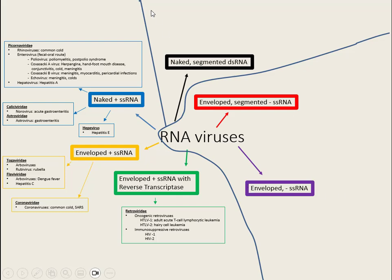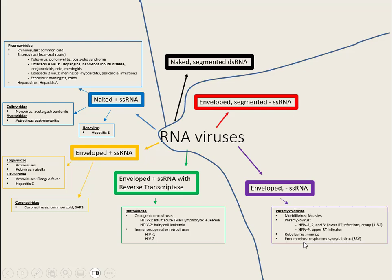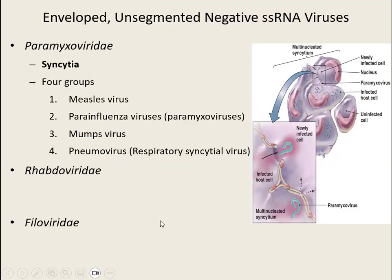Now onto our last group: the negative-sense single-stranded RNA viruses. Both subgroups are enveloped. The biggest difference is that some have segmented RNA with multiple copies, whereas others have one long strand. In the unsegmented group we have three families: Paramyxoviridae, Rhabdoviridae, and Filoviridae.